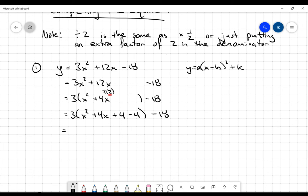Bear in mind, I'm not teaching how completing the square works, just reviewing the procedure. Once I've added and subtracted that four, I want to take the negative four out by multiplying by the coefficient of three. So it's minus 12 minus 18.